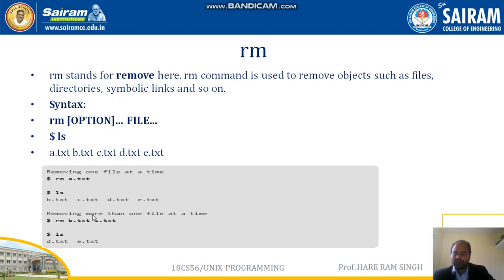We can also remove more than one file at a time. For example, 'rm b.txt c.txt' removes both b.txt and c.txt simultaneously. Since a.txt was already removed, running ls afterwards will show only d.txt and e.txt remaining in the current directory.